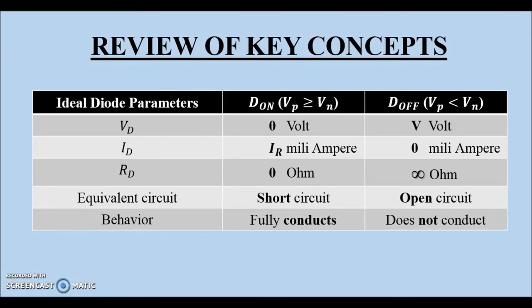Let us first revise the parameters pertaining to ideal diode under dOn and dOff conditions. Under dOn condition, Vd is equal to 0V and Id is equal to forward current through the diode which is limited by the circuit, thus making Rd equal to 0 ohm. Therefore, the ideal diode is short circuit for the region of conduction.